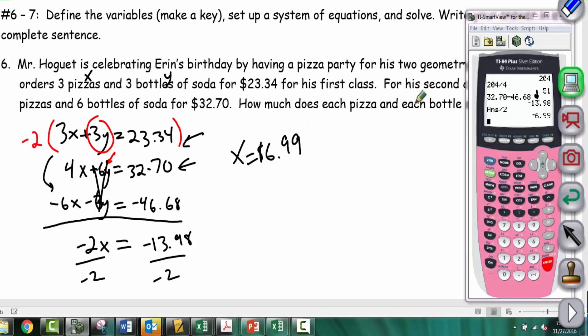Now we need to figure out the cost of each bottle of soda. We plug x into one of the equations: 3 times 6.99, which is our x, plus 3y equals 23.34. Let's calculate 3 times 6.99.